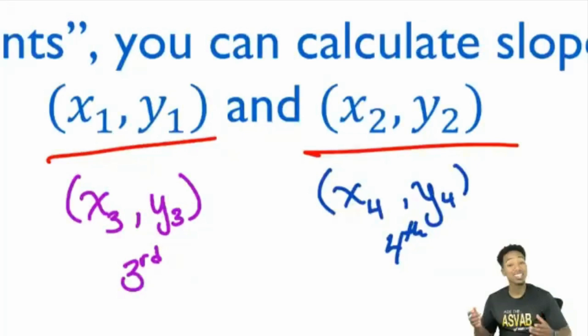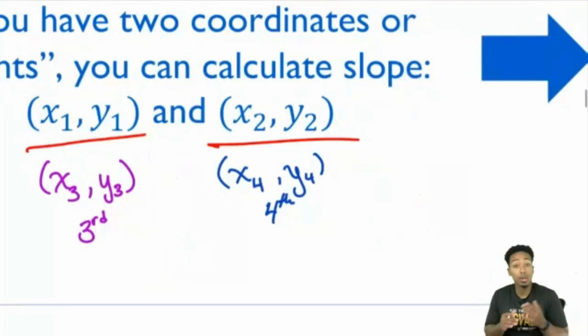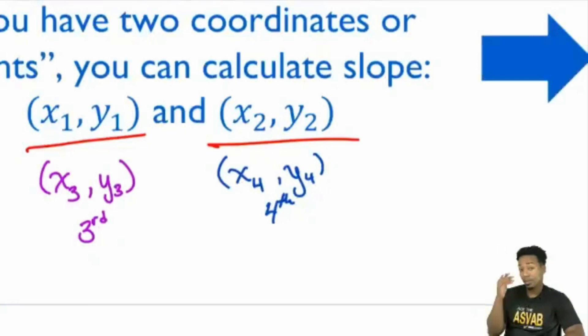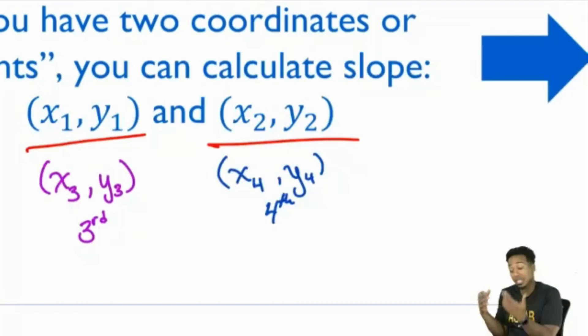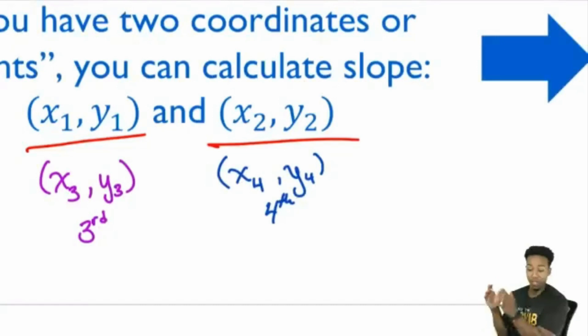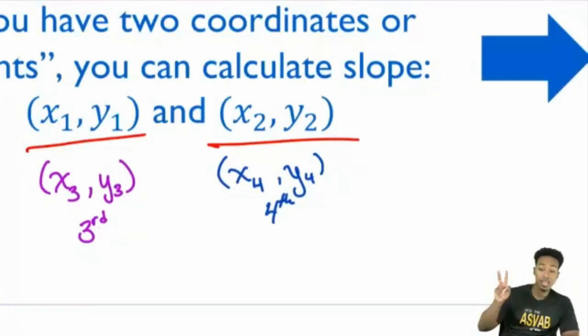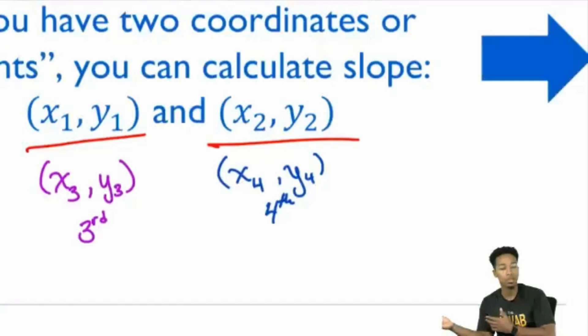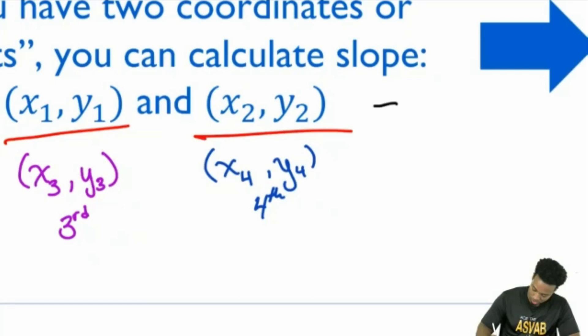The order in which you name the coordinates doesn't matter at all. You might want to pick carefully to avoid negative numbers, but it's up to you. The key point: x1, y1 just means the first pair; x2, y2 just means the second pair. And which coordinate you choose to call x1,y1 versus x2,y2 — that does not matter.